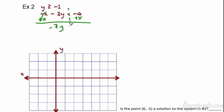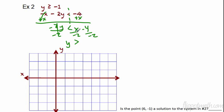We get negative 2y is less than x minus 4. Now we're going to divide by negative 2. Warning — when you divide or multiply an inequality by a negative, the direction of the inequality switches. So these cancel and we get y is greater than. There's a 1 in front of the x, so we get one over negative two — that's negative one-half x. And negative 4 divided by negative 2 is positive 2. So y is greater than negative one-half x plus 2. We first added x to each side, then divided by negative 2 — that's why we switch the sign.